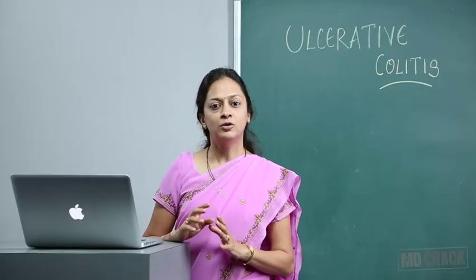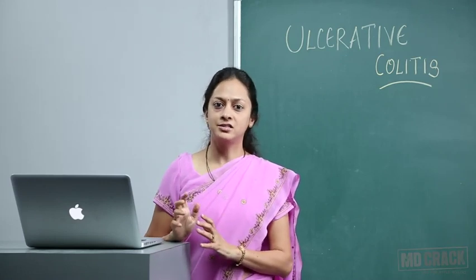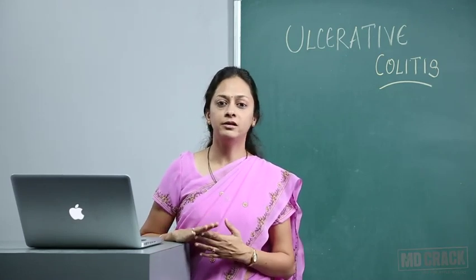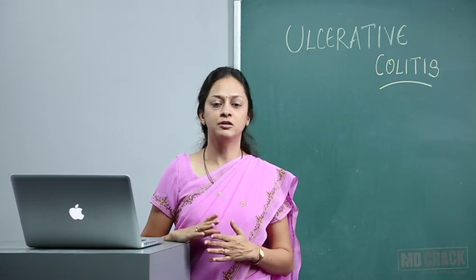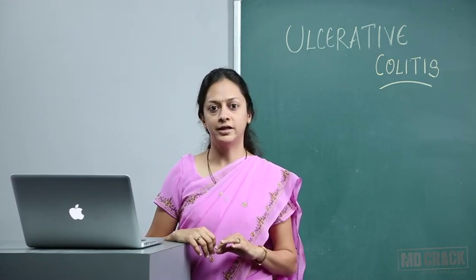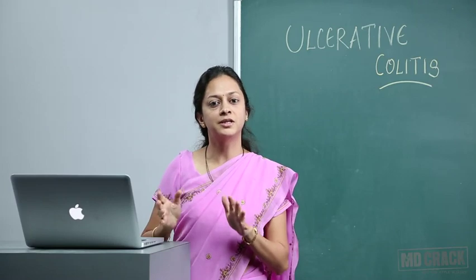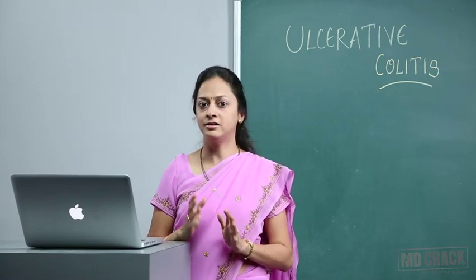Incidence peaks during the 3rd decade of life and again in the 7th decade of life. When differentiation between ulcerative colitis and Crohn's colitis is impossible, the patients are classified as having indeterminate colitis. It is not something in between Crohn's and ulcerative — when you cannot determine whether it is Crohn's or ulcerative, then it is indeterminate colitis.